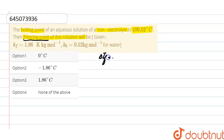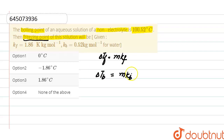Depression in freezing point: ΔTf equals molality into Kf, where Kf is the molar depression constant. Elevation in boiling point: ΔTb equals molality into Kb, where Kb is the molar elevation constant. Since the solution is the same, molality is the same in both equations.